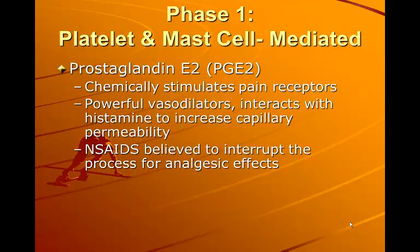Prostaglandin E2 chemically stimulates pain receptors and is a powerful vasodilator. It interacts with histamine to increase capillary permeability. NSAIDs, or non-steroidal anti-inflammatory drugs, are believed to interrupt this process for analgesic effects by trying to stop or decrease prostaglandin production.